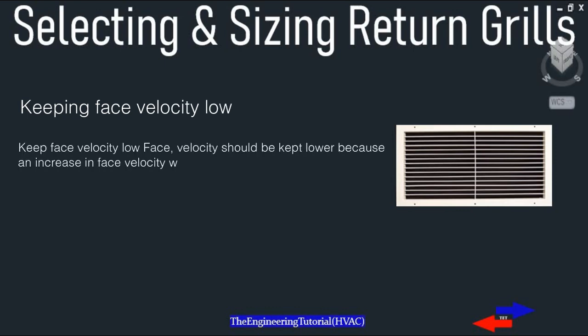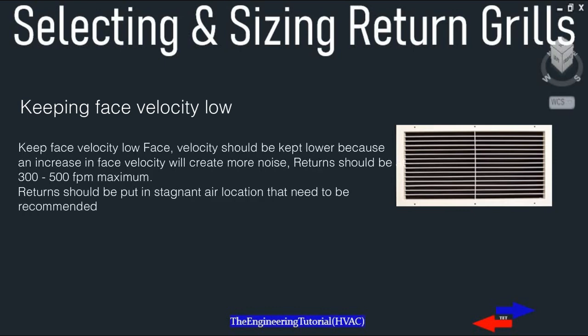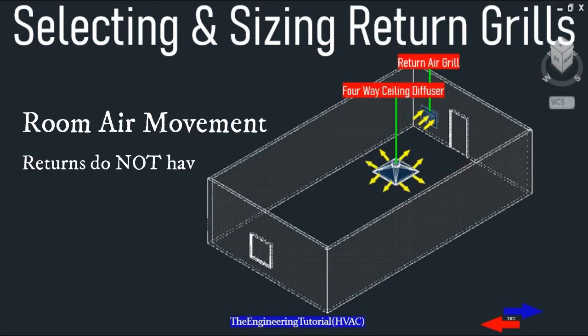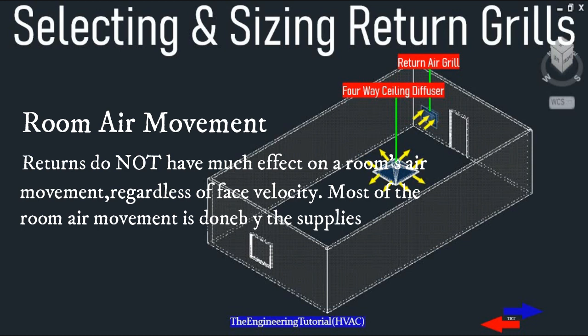The total CFM capacity of return grills must equal or exceed the total CFM capacity of supply diffusers. Face velocity should be kept lower because an increase in face velocity will create more noise. Returns should be at 300 to 500 fpm maximum, placed in stagnant air locations — high for cooling mode and low for heating mode. Returns do not have much effect on room air movement regardless of face velocity; most room air movement is done by the supplies.